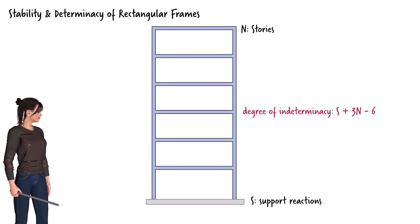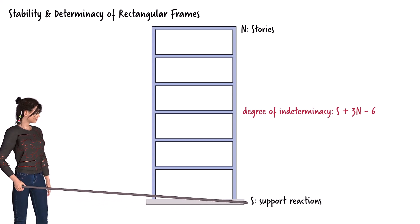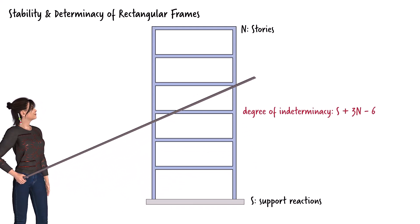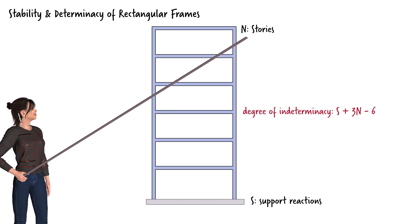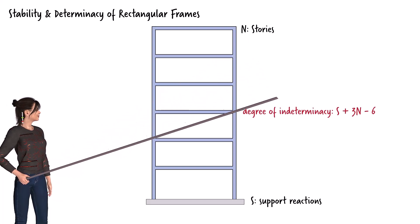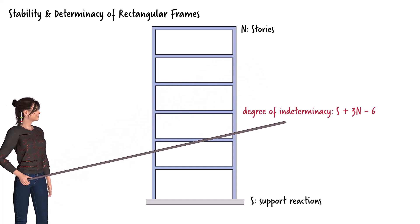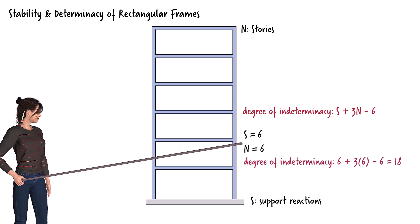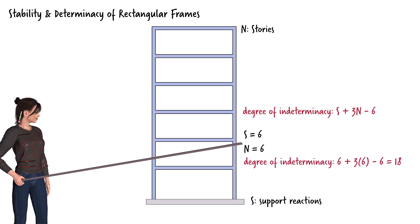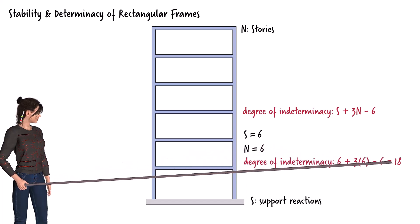In general, a stable single bay frame with s support reactions and n stories has a degree of indeterminacy given by: s plus 3n minus 6. If we assume fixed supports, we get 6 for s. For a six-story frame where n equals 6, the degree of indeterminacy of the frame becomes 18.